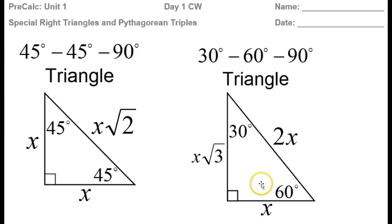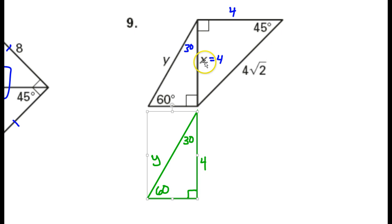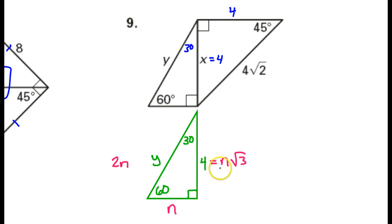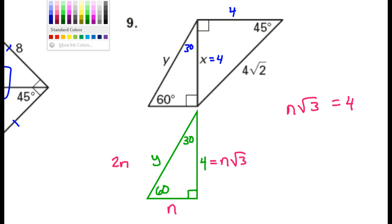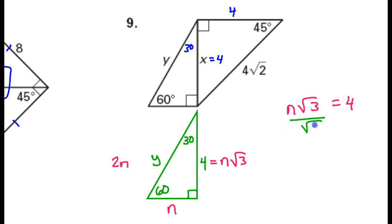From the pattern we have memorized, the short leg is n, the hypotenuse is 2n, and the long leg is n radical 3. Because x has already been used, I'll use n instead. Take the side that has an actual value given, make an equation, and solve it. So basically, n radical 3 is equal to 4. If I divide both sides by radical 3, that's going to give me n is equal to 4 over radical 3.